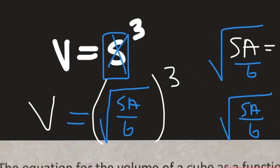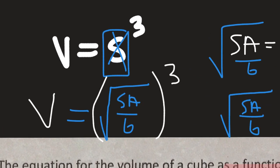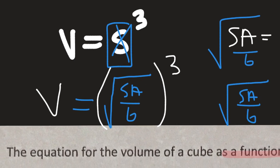Notice the only variable in here is surface area — number, division, square root operation, cube operation. So we have one variable, and that variable is surface area. Wonderful job. Let's see what else we got.